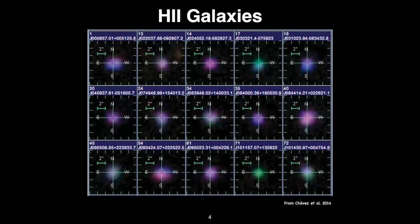Many of them are now also identified as Green Peas, in a certain range of redshifts. Green Peas were identified in the Sloan Digital Sky Survey. But essentially they are the same kind of objects — only a slightly different way of selecting them. H2 Galaxies are selected spectroscopically, and Green Peas are selected photometrically. They are similar kinds of objects with a great intersection between both families.